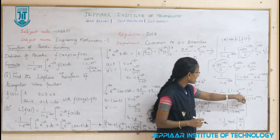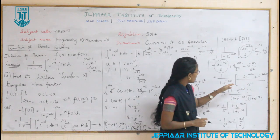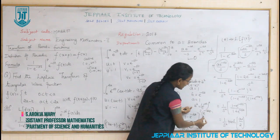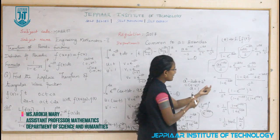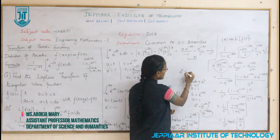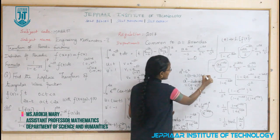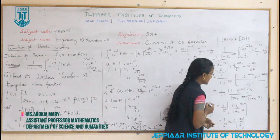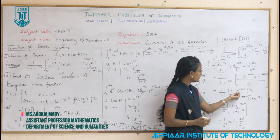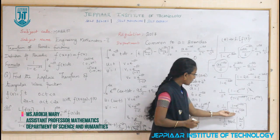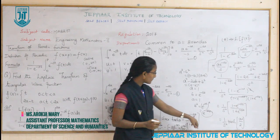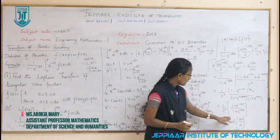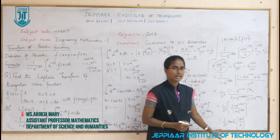The numerator becomes (1 − e^(−as))². The denominator 1 − e^(−2as) equals (1 − e^(−as))(1 + e^(−as)) by the difference of squares formula a² − b² = (a − b)(a + b). One factor of (1 − e^(−as)) cancels, leaving (1 − e^(−as)) / (1 + e^(−as)) divided by s². This matches the tanh formula, so the final answer is (1/s²)·tanh(as/2). Thank you.